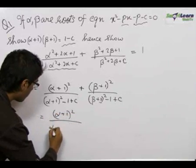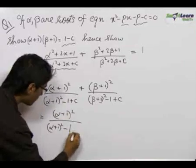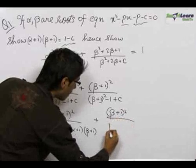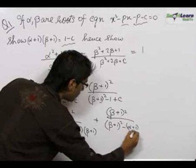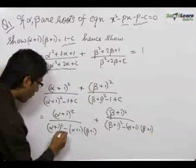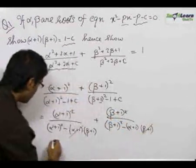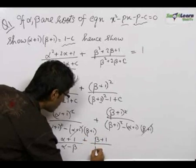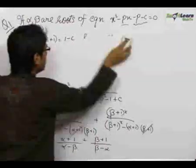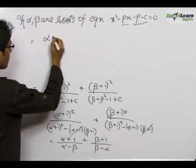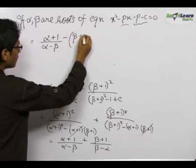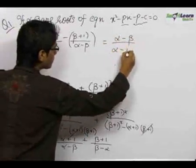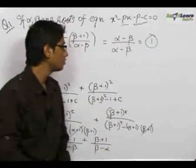This gives us (alpha + 1)² / [(alpha + 1)² - (alpha + 1)(beta + 1)] plus (beta + 1)² / [(beta + 1)² - (alpha + 1)(beta + 1)]. Cancelling the common terms from both expressions, we get (alpha + 1) / (alpha - beta) + (beta + 1) / (beta - alpha), which becomes (alpha - beta) / (alpha - beta) = 1, which we needed to prove.